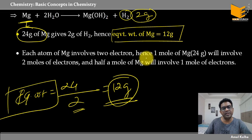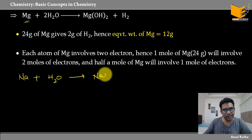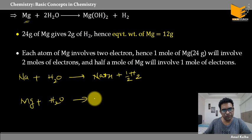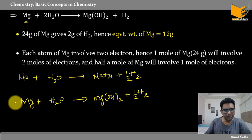And that is the meaning of equivalent weight — दोनों के equivalents same हैं। 23 gram of sodium is one equivalent, and 12 gram of magnesium is also one equivalent — दोनों same number of electrons दे रहे हैं। Equivalent का मतलब: अगर मैं दो elements ऐसे लूँ जिनके equivalents same हैं — मतलब उनके equivalent weights same हैं — तो दोनों same number of electrons दे रहे हैं या ले रहे हैं।